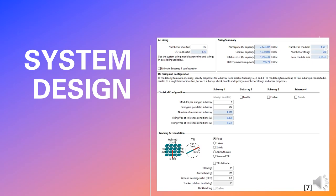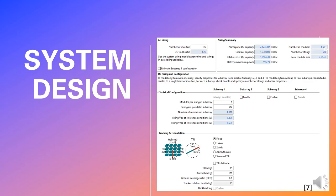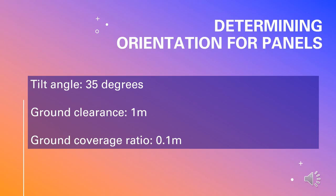We implemented the information we obtained for the inverter in the system design tab. We changed the number of inverters and module configurations for a standard DC to AC ratio of 1.2. Tracking and orientation was kept fixed. Using a parametric function in SAM, we determined the optimal variables for tilt angle, ground clearance, and ground coverage ratio. It was found that a tilt angle of 35 degrees, a ground clearance of 1 meter, and a ground coverage ratio of 0.1 maximize our annual energy from the panels.